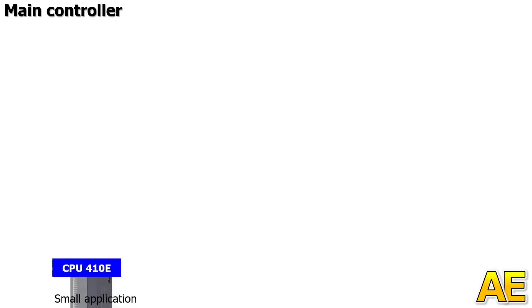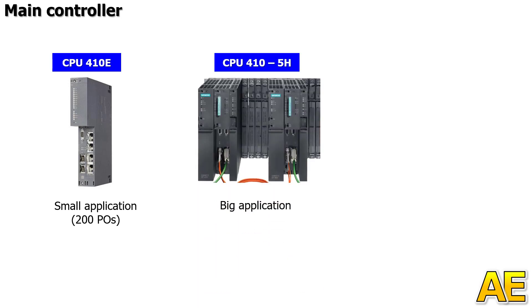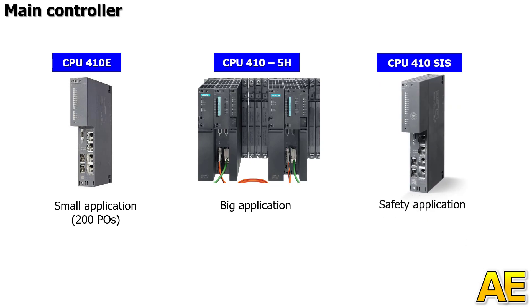Now we come to some controllers often used for PCS7. The first is the CPU410E, used for small applications with around 200 IO. The second is the CPU410-5S, used for big applications. And the third is the CPU410SIS, used for safety applications.